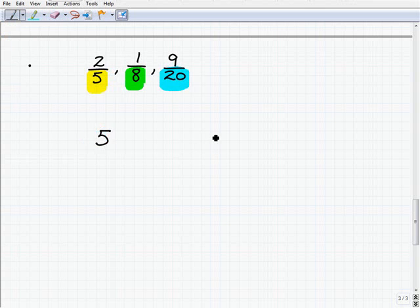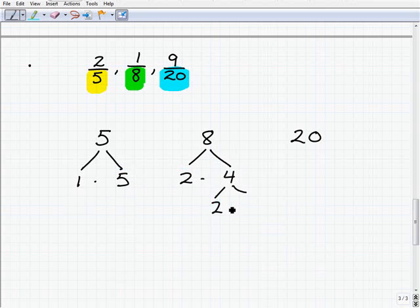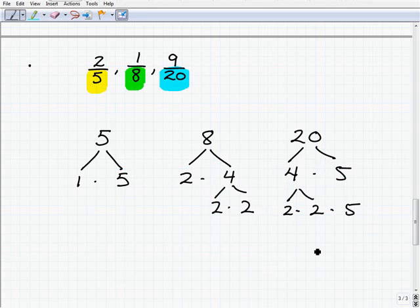We have 5, 8, and 20. Go ahead and prime factor each. So 5, once again, prime factors as 1 times 5. 8 is 2 times 4, or 2 times 2 times 2. We'll write this down here nice and neat in a second. 20 is going to be 4 times 5, or 2 times 2 times 5.